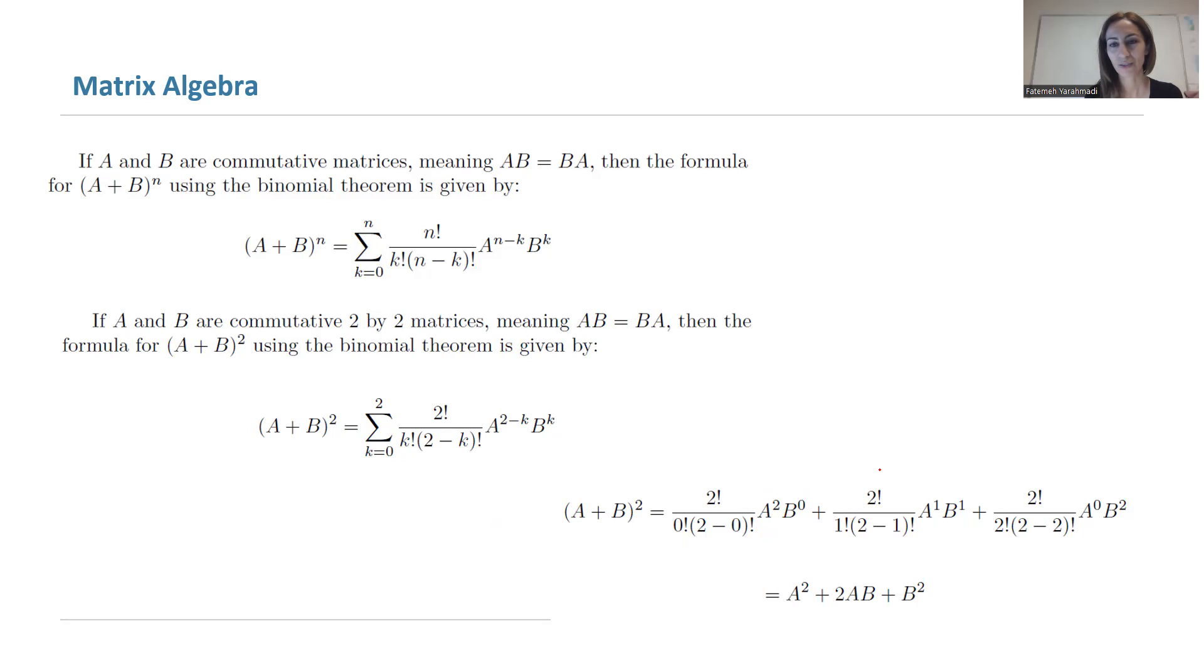Plus 2 factorial over 1 factorial times (2 minus 1) factorial times A to the first power times B to the first power, which is AB, plus 2 factorial over 2 factorial times (2 minus 2) factorial times A⁰ times B².